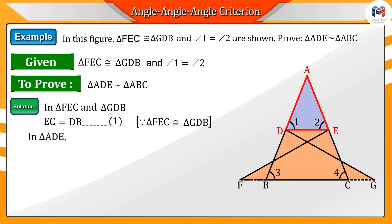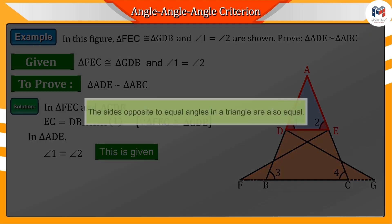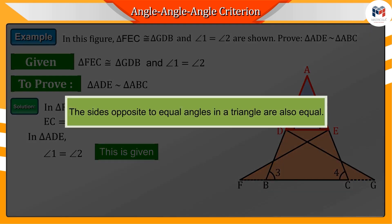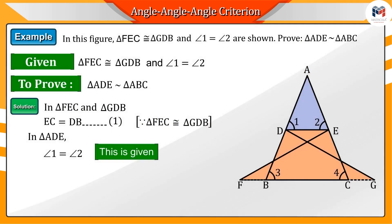Now, if we look at the triangle ADE, we get to know that angles 1 and 2 are the same. You would remember that the sides opposite to the equal angles in a triangle are also equal. Hence, sides AD and AE would be equal.